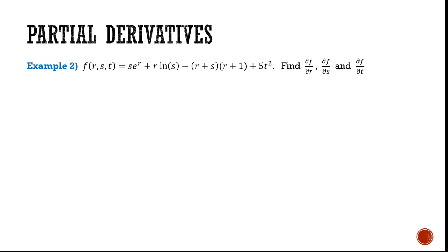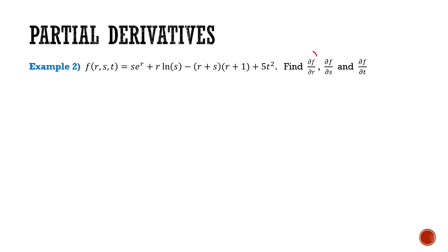Let's do one more example. Here I have the function of r, s, and t, and it's this giant function we see here. What we're going to be looking for is the derivative of f with respect to r, the derivative of f with respect to s, and the derivative of f with respect to t. So first let's do ∂f/∂r. R is the only variable that will be considered changing, and all the other variables, s and t, are going to be treated like constants. Let's do the derivative of r for each one of these terms independently.